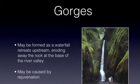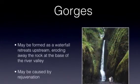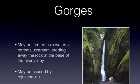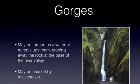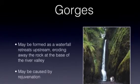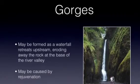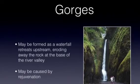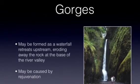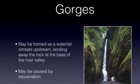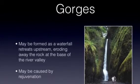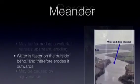A gorge may be formed as a waterfall retreats upstream, eroding the rock away at the base of the river valley. Alternatively, it may be caused by rejuvenation when the river begins to cut down into its channel because of a fall in sea level.